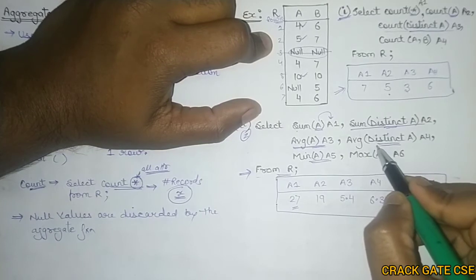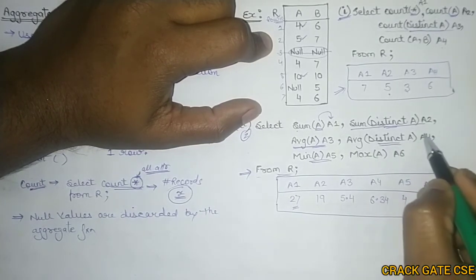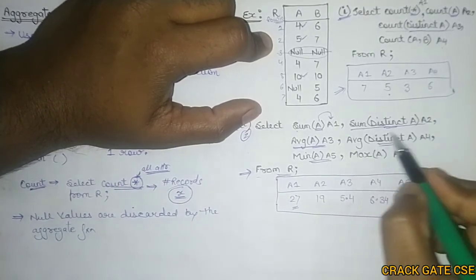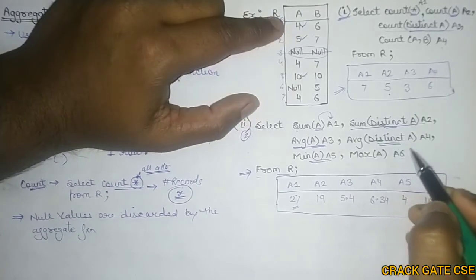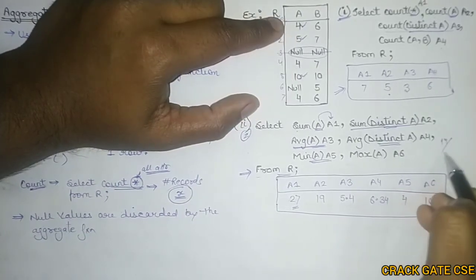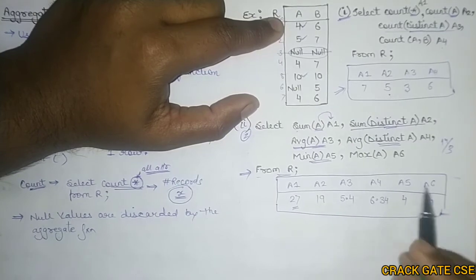Now we have to find out the average of distinct values of A and store them in A4. So what are the distinct values? 4, 5, 10 which is 19. 19 divided by 3 will give you 6.34 that is stored in A4.